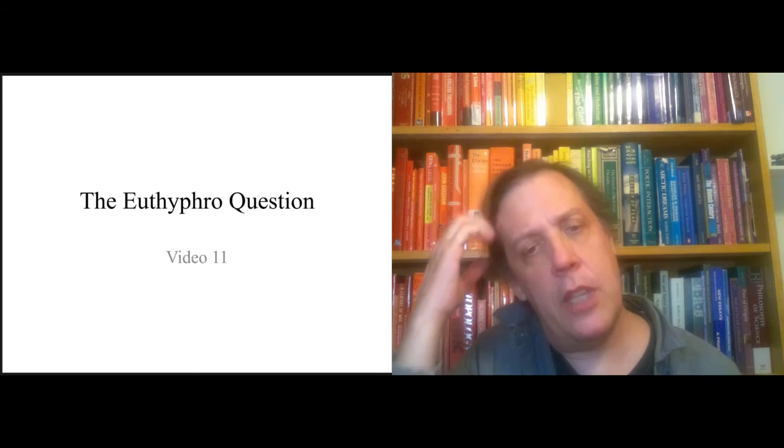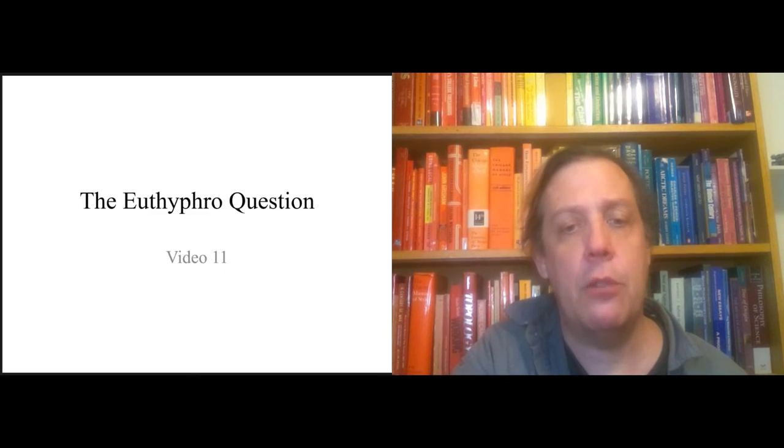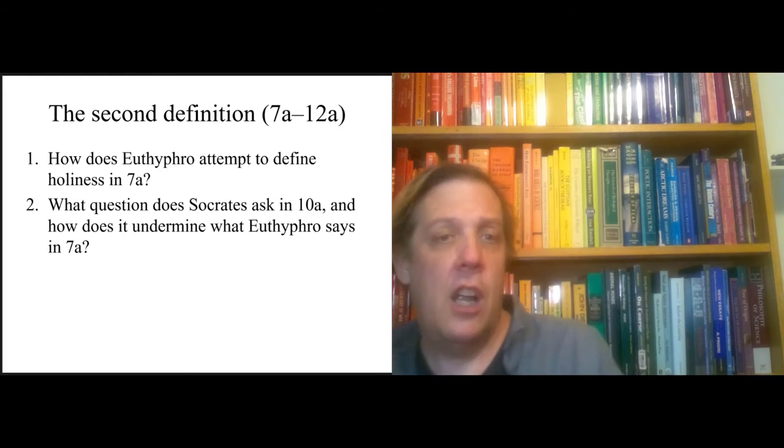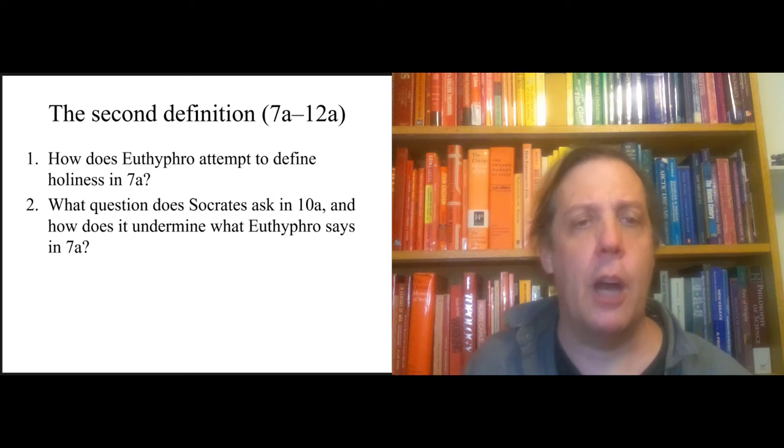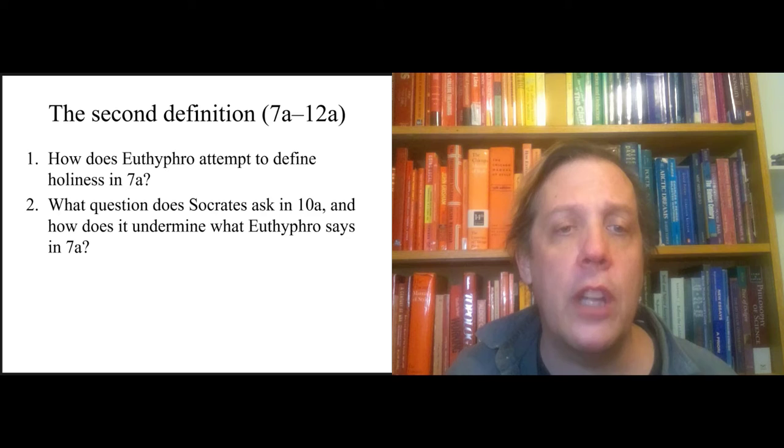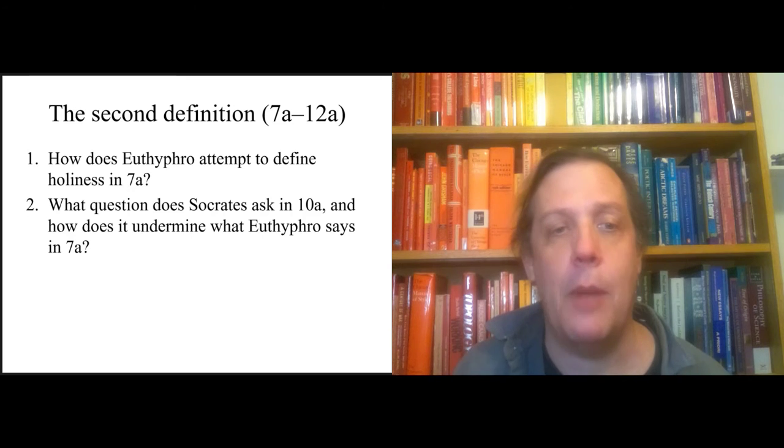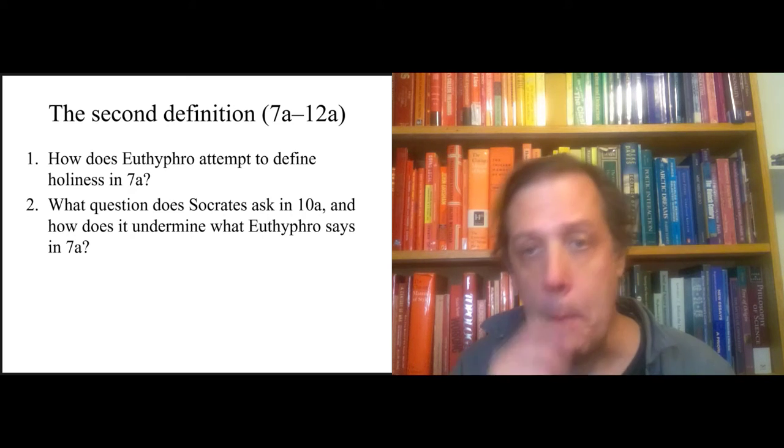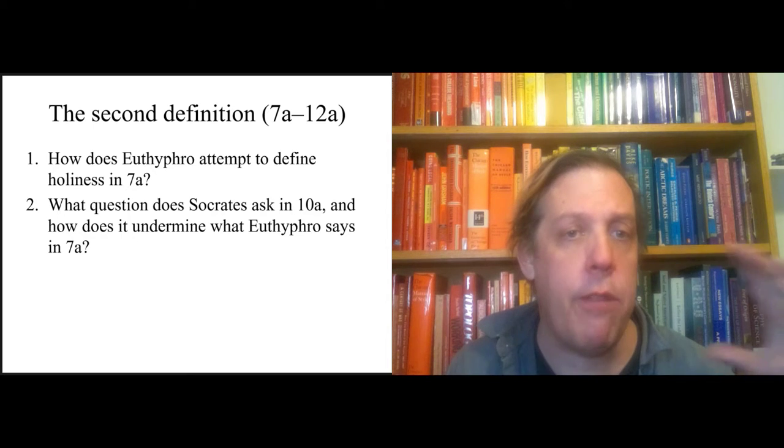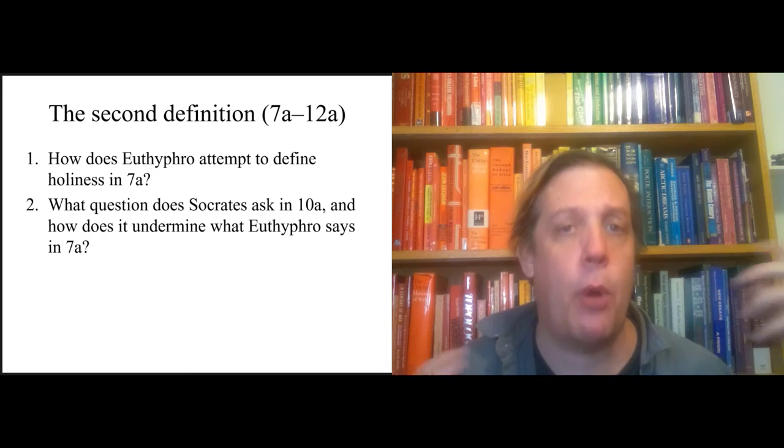In the lead-up to this, I had two questions for you in the discussion forum. These are reading comprehension questions. How does Euthyphro try to define holiness in 7a? And what question does Socrates ask in 10a, and how does it undermine what's going on in 7a? That back and forth is the structure for this part of the dialogue.